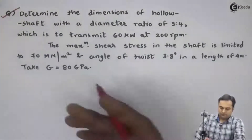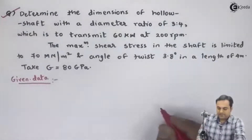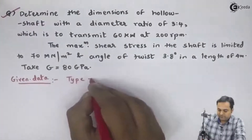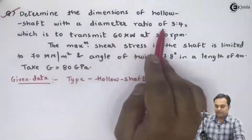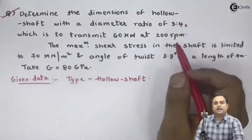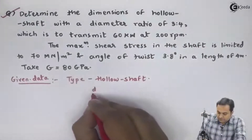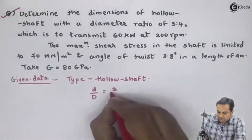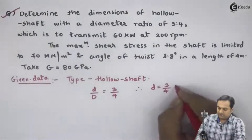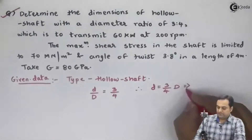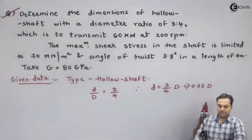We will write the given data first. The type of shaft is a hollow shaft. The diameter ratio of 3 is to 4 refers to inner diameter versus external diameter, so small d divided by capital D is equal to 3 by 4. Hence we get the relation small d is equal to 0.75 times of capital D.